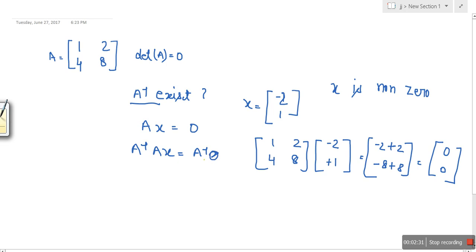A inverse times A times X now equals A inverse times 0. If 0 is multiplied with any matrix, it always will be 0. And here A inverse A, this is an identity matrix, so when identity matrix is multiplied with any matrix, in this case this is a vector, so it will be the same as X.